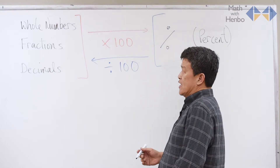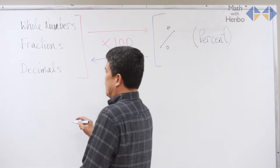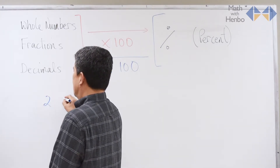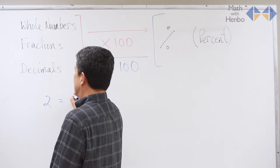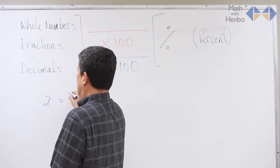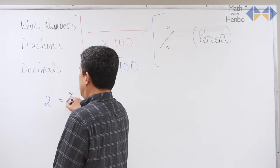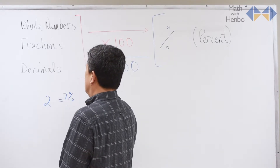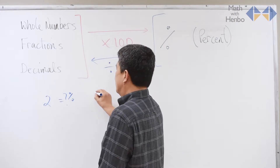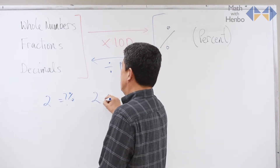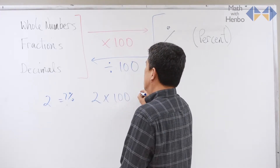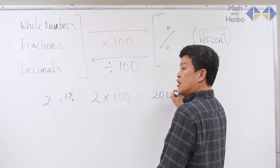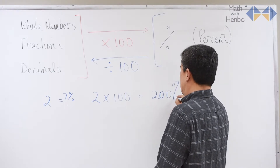Let me give you an example. If I have two, and I want that as a percent, all I have to do is take two and multiply by a hundred. That gives me two hundred percent.